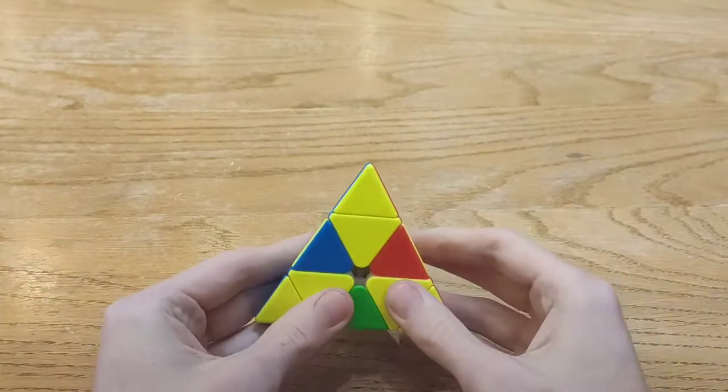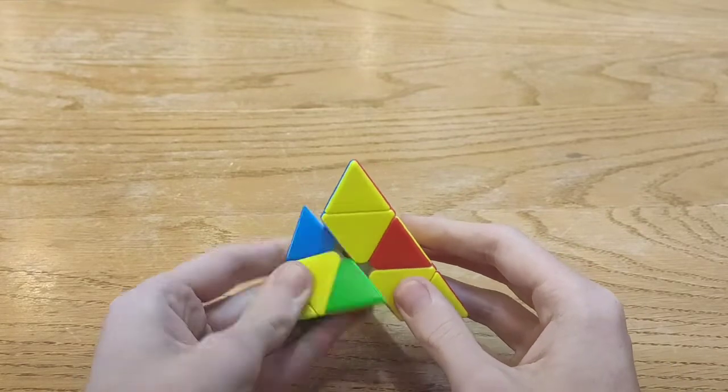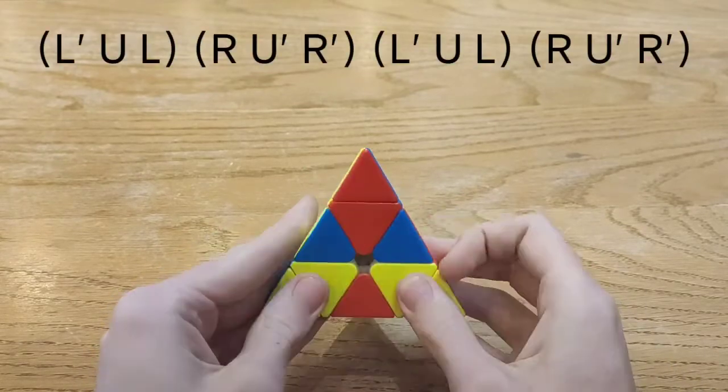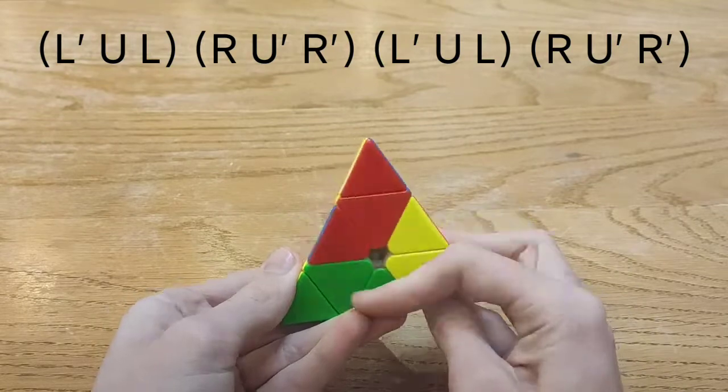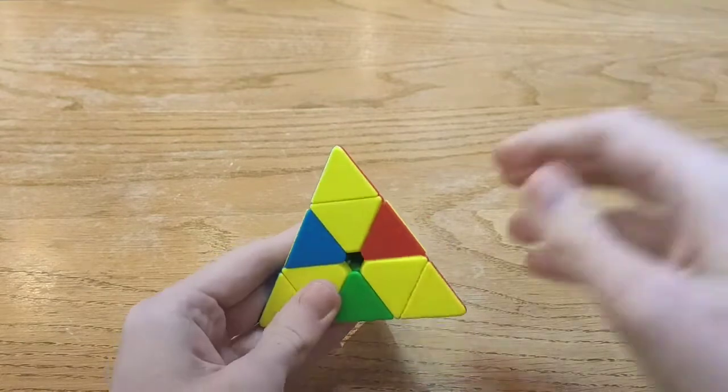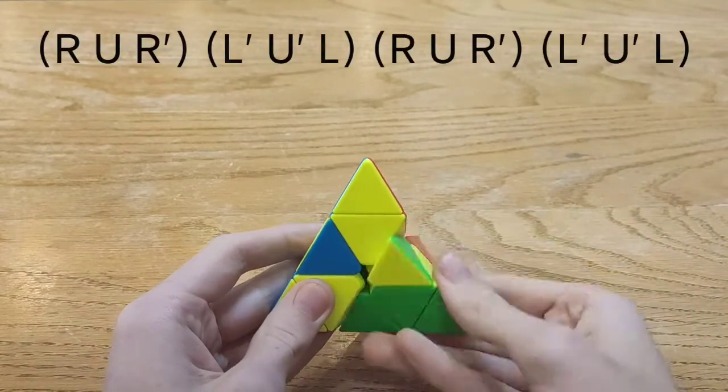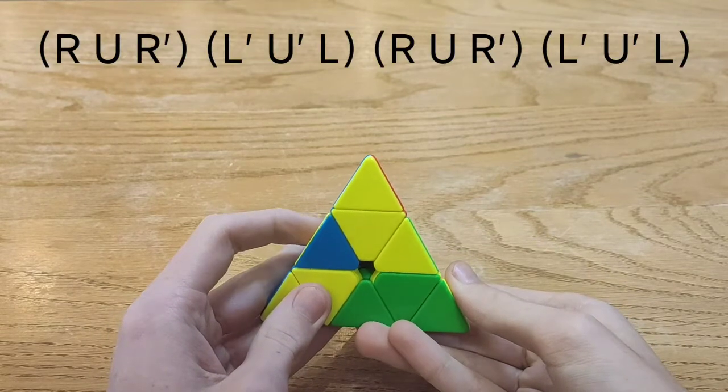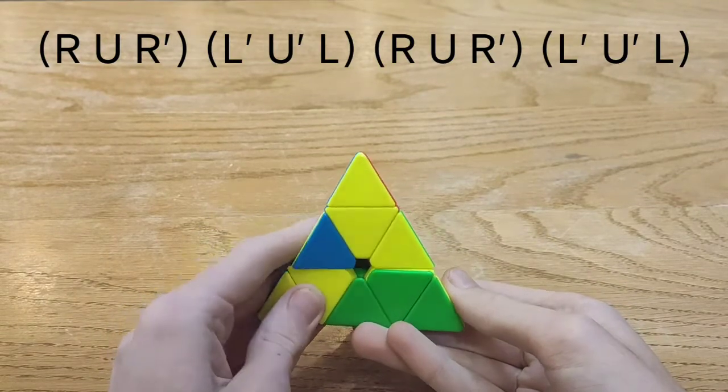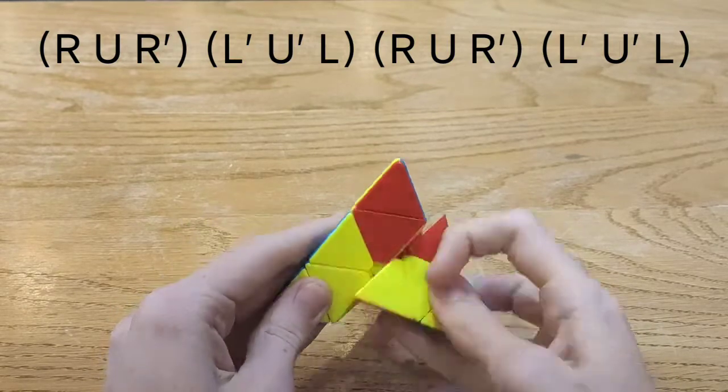First off, instead of starting from the right you can start from the left. Another thing you can do is invert the U moves. So you start from this side but instead of pushing out like this you're going to pull like this and do it like that.